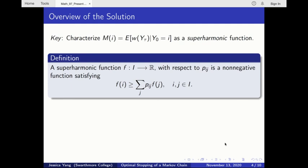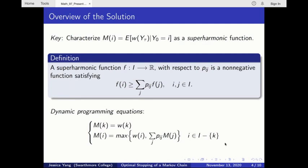To show m is superharmonic, we first rewrite m in the following system of equations. Intuitively, these equations say that if the Markov chain starts at the absorbing state, the maximum reward that we can expect is the reward of the absorbing state. At every other state, the maximum reward we can expect is either the reward that we get from stopping the process at that state, or the maximum reward we can expect from continuing the process.